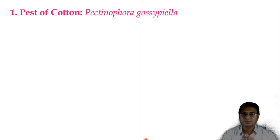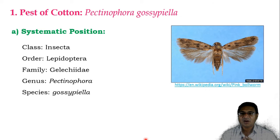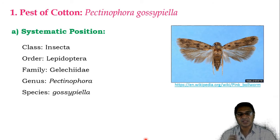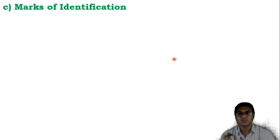The first pest of cotton is Pectinophora gossypiella. Its systematic position: class Insecta, order Lepidoptera, family Gelechiidae, genus Pectinophora, species gossypiella. The host plant of this cotton bollworm, or pink bollworm, is cotton.